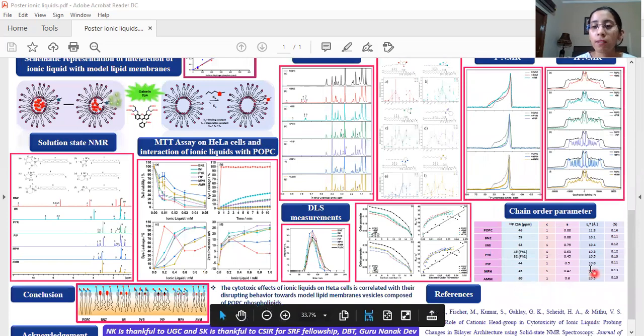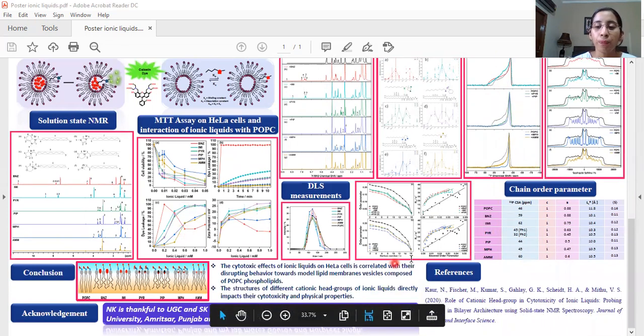And these are the parameters which we obtained which showed that the chemical shift anisotropy from the 31P NMR stated that the head group was affected the most in the case of benzimidazolium, imidazolium and ammonium ionic liquids and the order chain parameter which was affected in all the cases but was maximum for the benzimidazolium and the piperidinium ionic liquids.